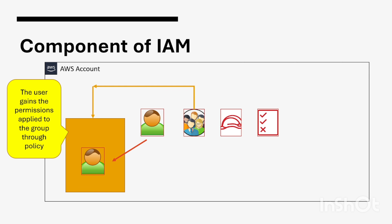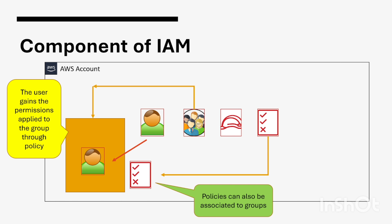A user gains the permissions applied to the group through the policy. A policy can be attached to an individual user and it can also be attached to a group. Whenever a policy is attached to a group, the permissions granted or denied through that policy will be inherited by each and every user belonging to that group. This way we do not have to attach the same policy individually to each user — we can group them and apply a single policy.